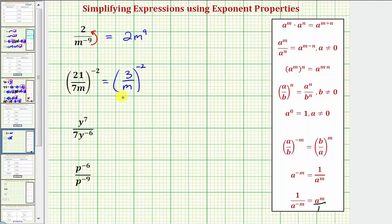There's a couple of ways to show the next step. Looking inside the parentheses, I'm going to think of this as three to the first divided by m to the first. And so because we have powers to powers, we multiply the exponents. So this would be equal to three to the power of negative two divided by m to the power of negative two.